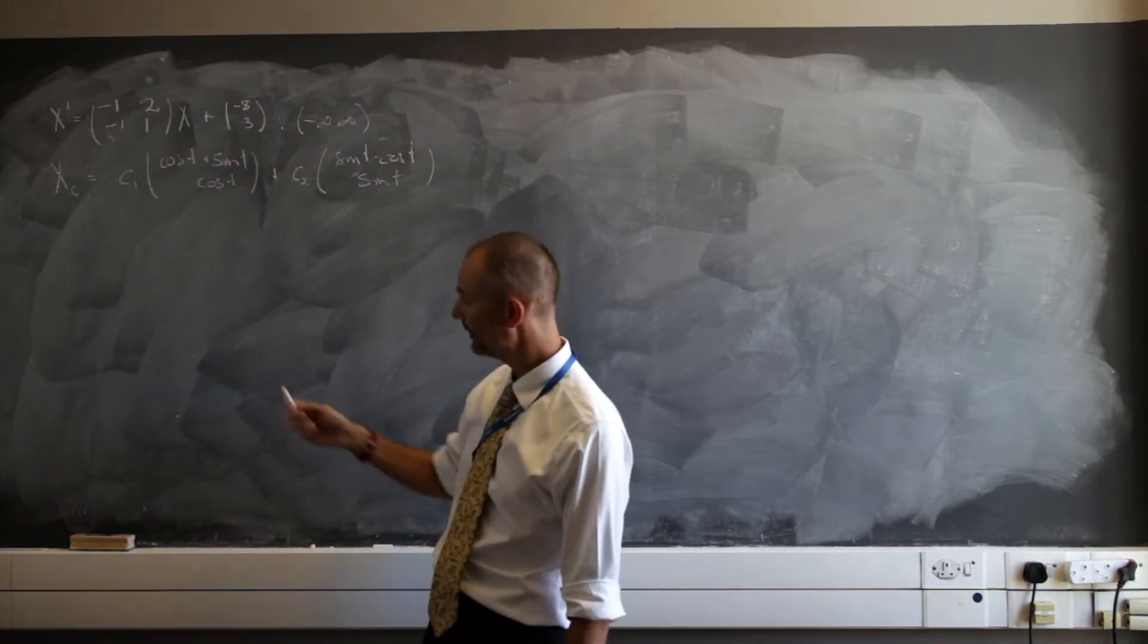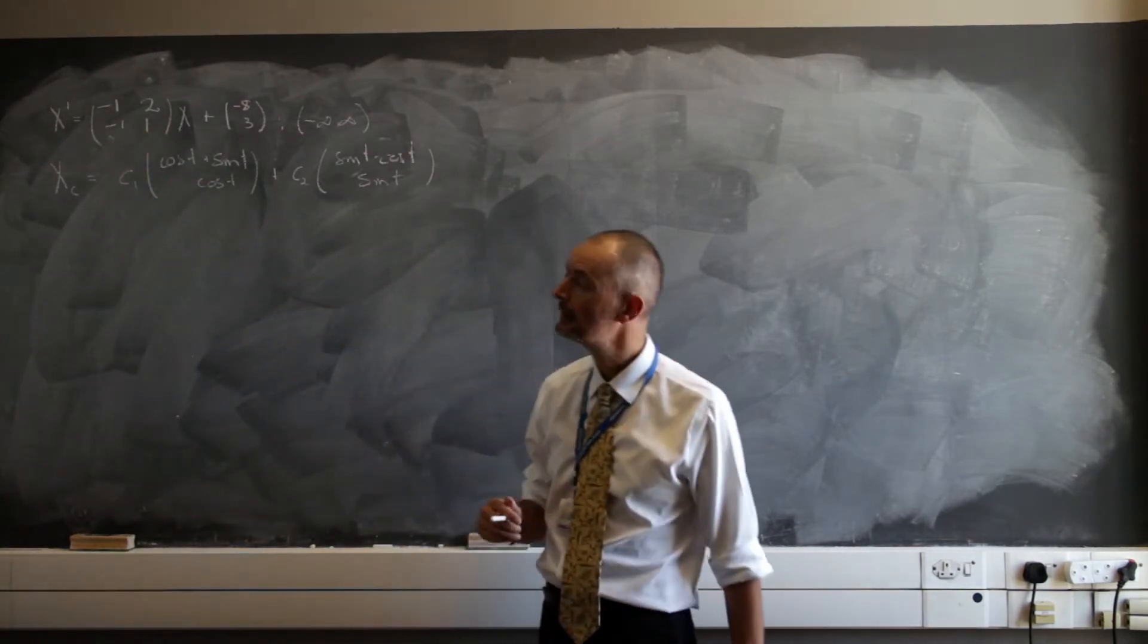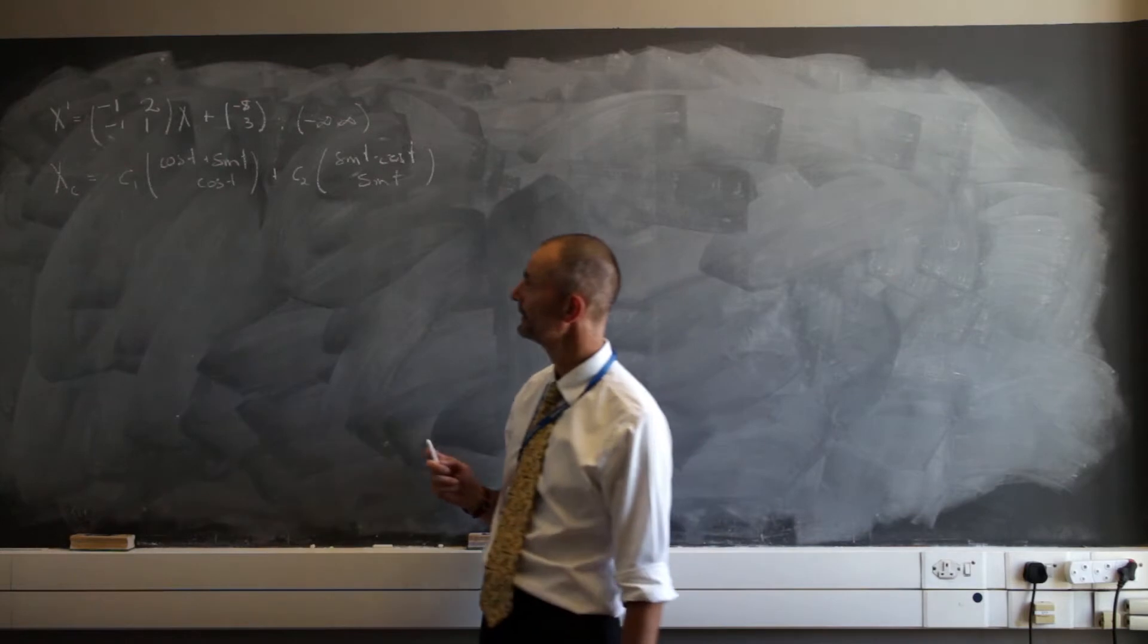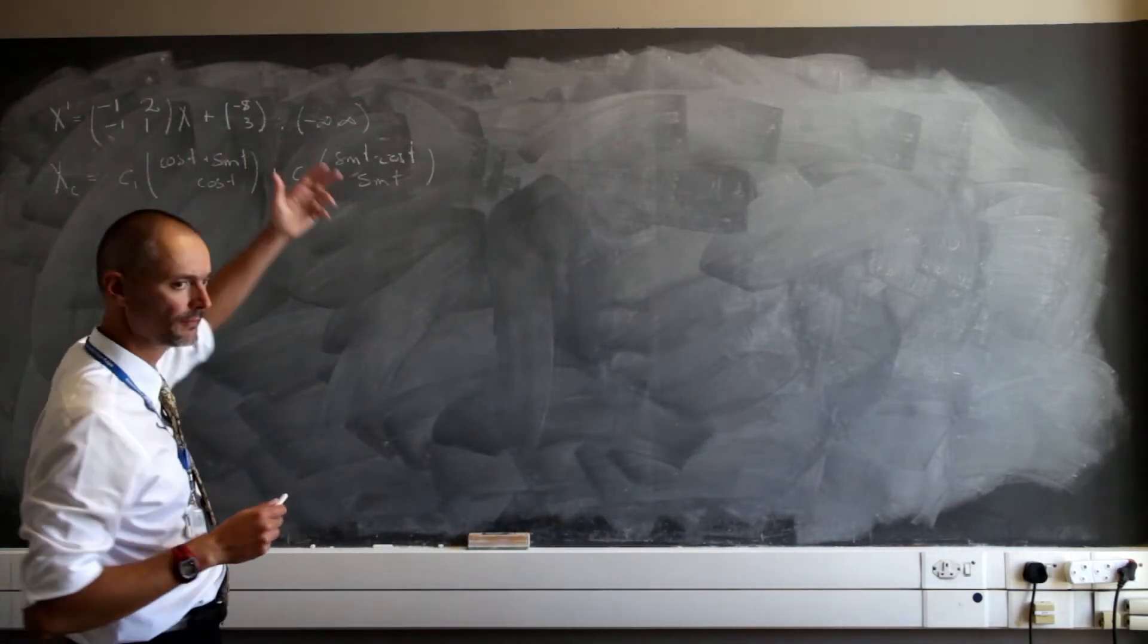We only had our matrix A times our matrix X, and that was equal to the first derivative. Now we need to add something more, and there are two methods to solve this.